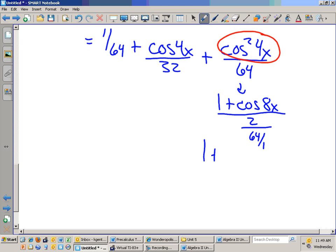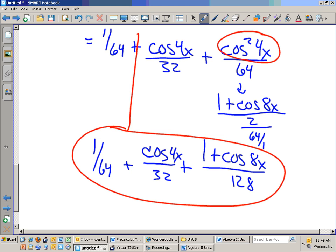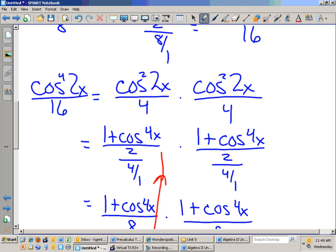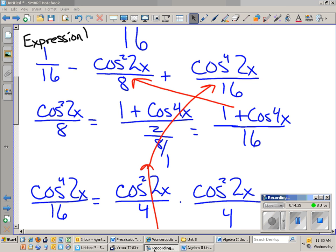1 plus cosine of 8x over 128. I have these other pieces, cosine of 4x over 32, 1 over 64, and I take that, and I plug that in. Back up to our expression for there. From there you should be able to simplify it and work things out. But we'll have that complete piece. So that's where we're at. You should be able to finish it off from there.